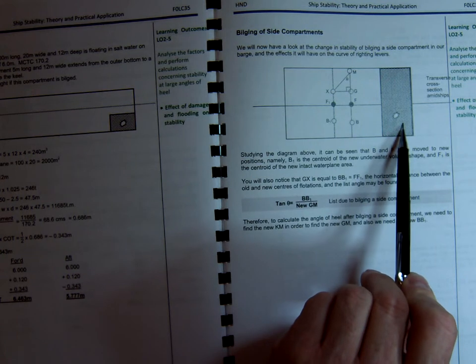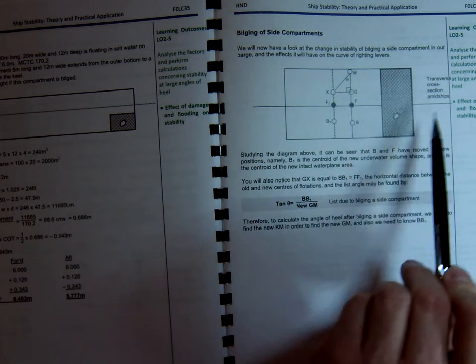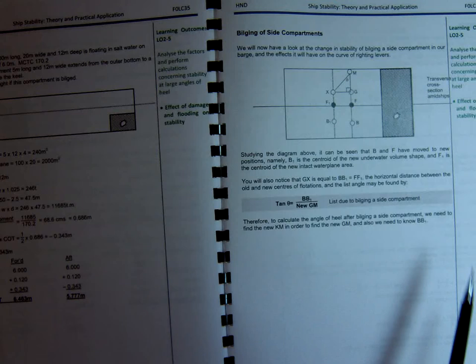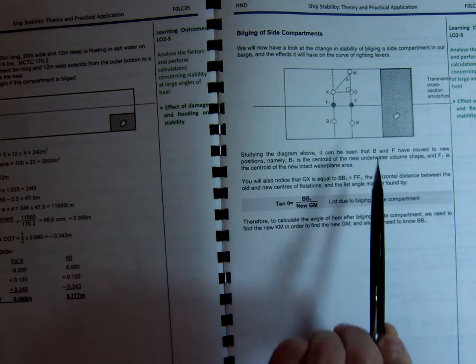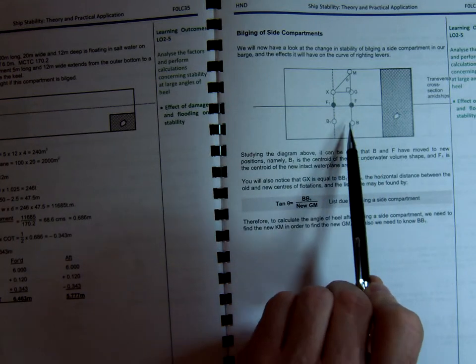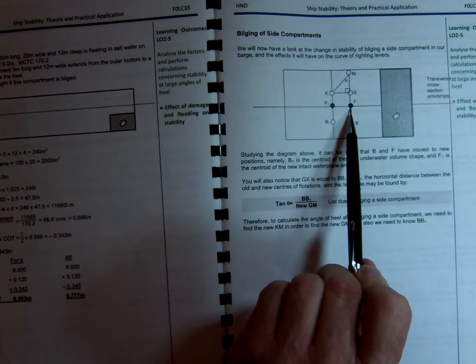And we've been bilged here on this side. So it's a cross-section at midships, a transverse cross-section. And you can see that B and F, our original positions, buoyancy and center of flotation,